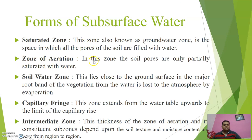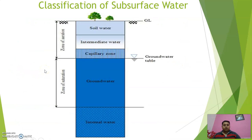Zone of aeration: in this zone the soil pores are only partially saturated with water. Some pores are filled with water and some are filled with air — partially filled with water. Soil water is present, intermediate water and capillary zone are also present. The capillary zone pores are filled with air, while pores in the soil water and intermediate zone are filled with water.